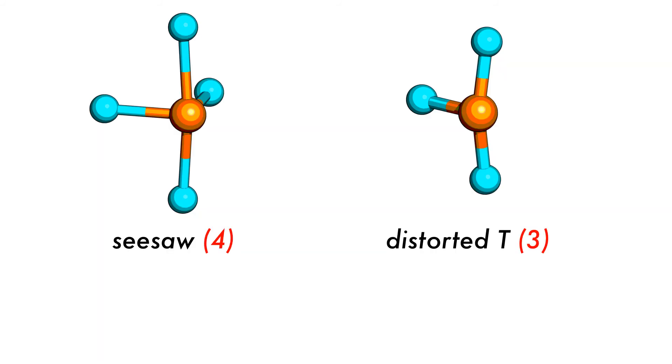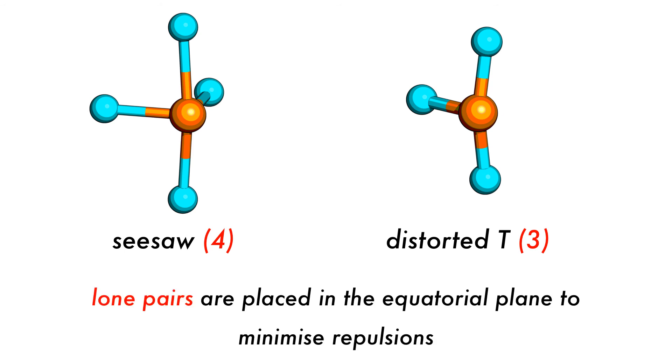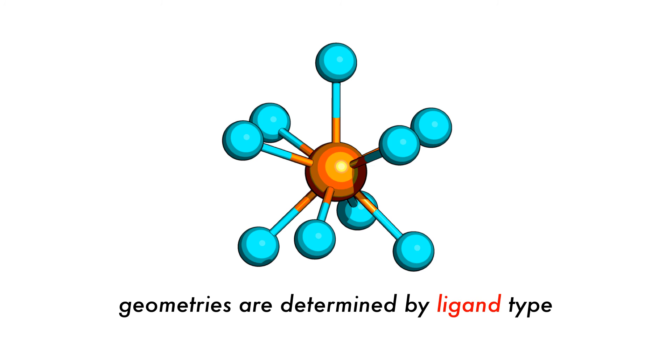Some other unique shapes exist, such as the seesaw, and others such as the distorted T. These structures arise due to the presence of lone pairs on the central atom that cause repulsion of the other bonded pairs and are placed in the equatorial plane to minimize repulsions. Some unusual geometries that are determined by ligand type are also possible.